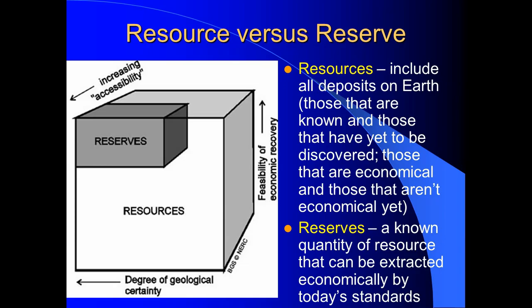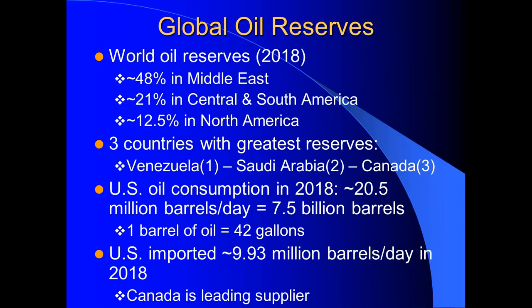Looking at global oil reserves using 2018 data: almost half — 48% — was found in the Middle East, including Iraq, Iran, Syria, and Qatar. About 21% is in Central and South America, where Venezuela is a major player. About 12.5% is in North America, but most of that is actually Canada, which has some fairly large deposits. The three countries with the greatest oil reserves were Venezuela at number one, Saudi Arabia at number two, and Canada at number three.